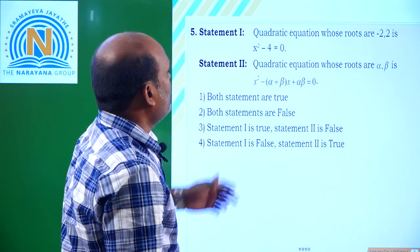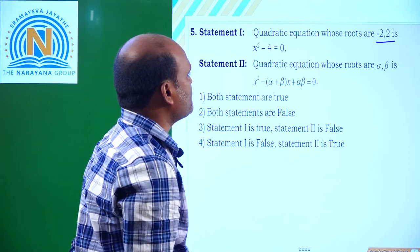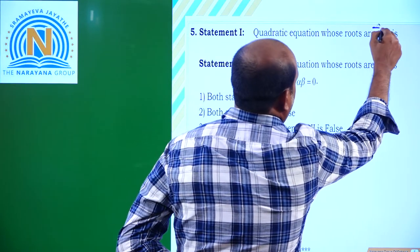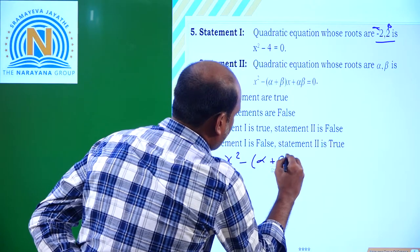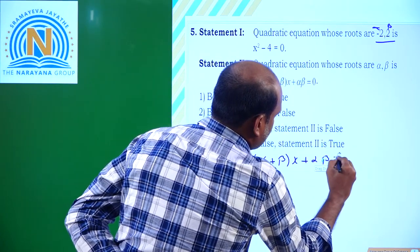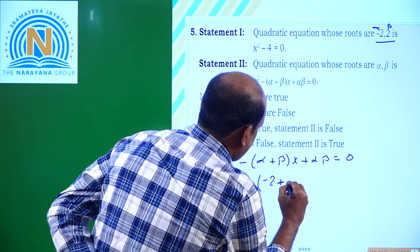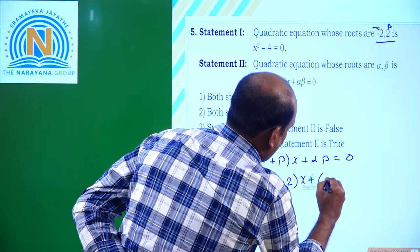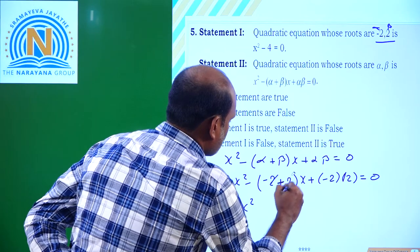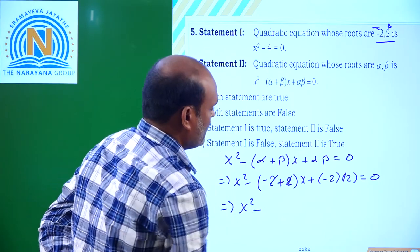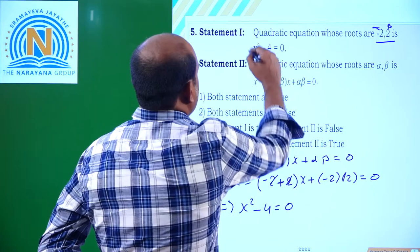Coming to the next question: the quadratic equation whose roots are -2 and 2 is x² - 4 = 0. Using the formula with alpha = -2 and beta = 2: x² - (alpha + beta)x + alpha·beta = 0 gives x² - 0·x + (−2)(2) = 0, so x² - 4 = 0. This is the correct statement.